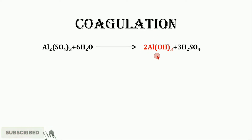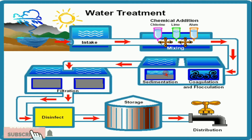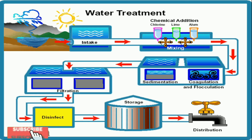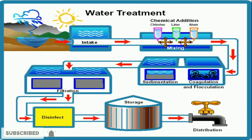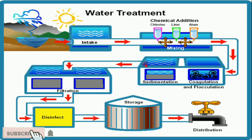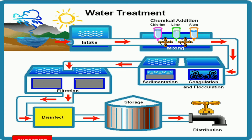After forming those coagulants, the water is sent into the sedimentation tank. In the sedimentation process, we remove suspended impurities by allowing the water to stand undisturbed for about two to six hours in a large tank. Most suspended particles settle at the bottom due to gravity and are removed. The sedimentation tank removes about 75% of suspended impurities.